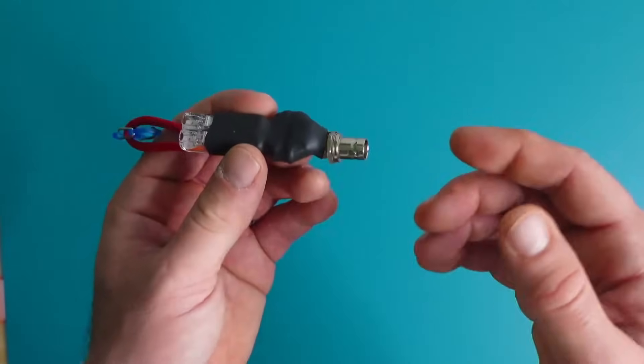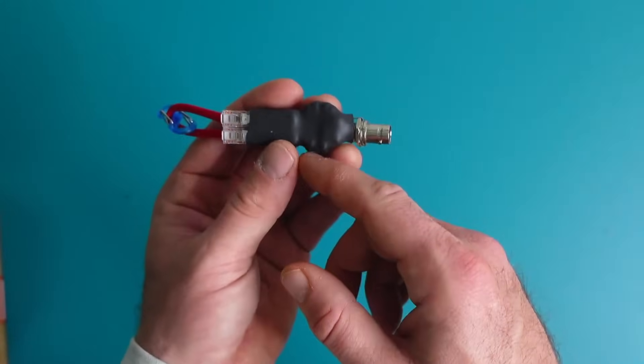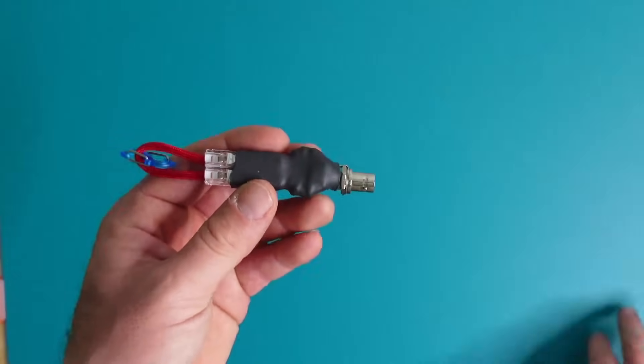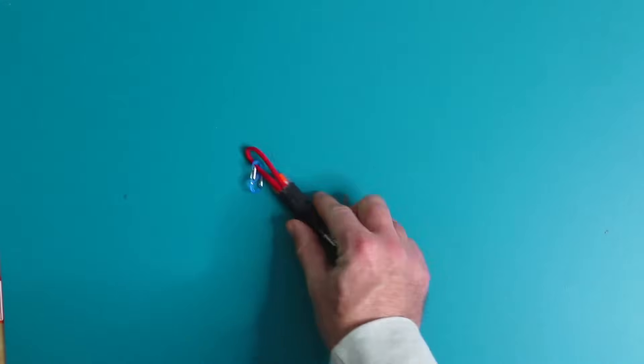But I'd like you to keep in mind during this that there's nothing saying you can't put a FT140-43 toroid in here with an SO239 or keep the BNC. Anyway let's get started building this and this is what you're going to need.